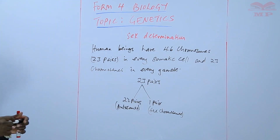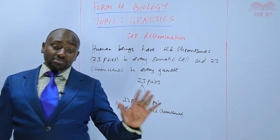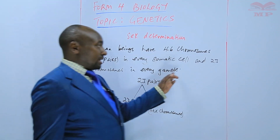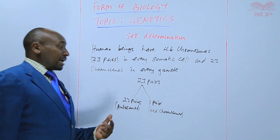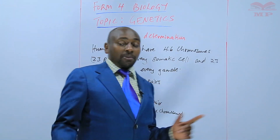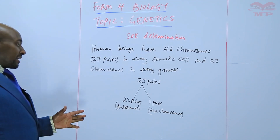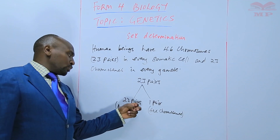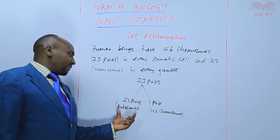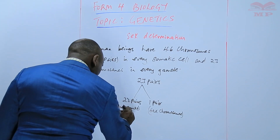So we have 23 pairs of chromosomes in every somatic cell — that is a body cell, not a gamete. A gamete has only 23, because it will one day undergo fertilization, and if it undergoes fertilization we get 23 plus 23 to give 46. These 23 pairs are divided into two: 22 pairs, which we refer to as autosomes, and they determine other body characteristics.